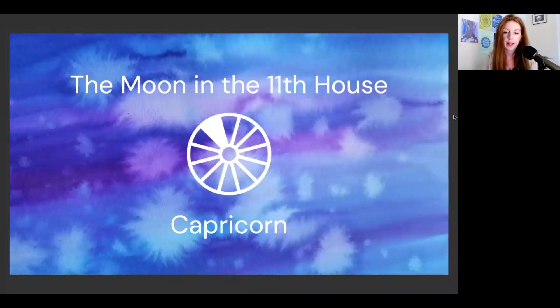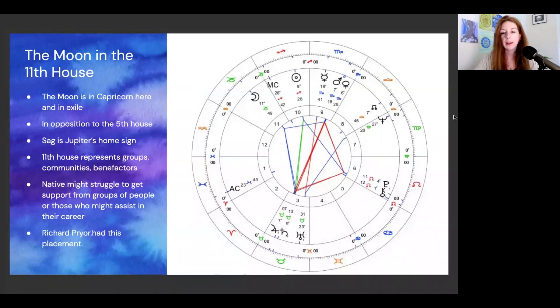Speaking of Capricorn, let's look at the moon in Capricorn. The moon here is in the place that is furthest away from Cancer, the place that the moon is most at home. Therefore, in Capricorn, it's the least at home. Capricorn is Saturn's domicile. The 11th house represents groups, communities, benefactors, people who lift us up and support us in our career and in the 10th house things. It's moving towards the 10th house. The native might struggle to get support from groups of people or those who might assist in their career. They might be met with coldness from others or be perceived to be cold-hearted, overly disciplined or overly ambitious. It could also speak to a comfort with the darker side of life. Creative work might express a dark tone to it.